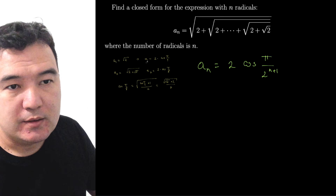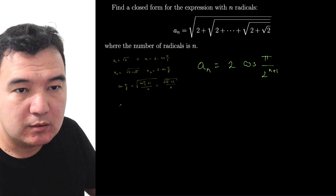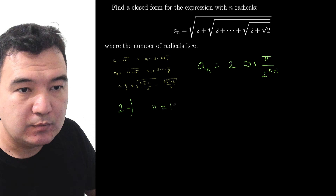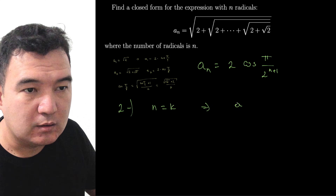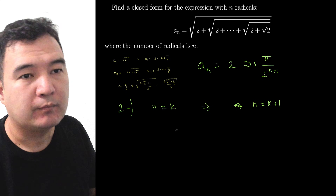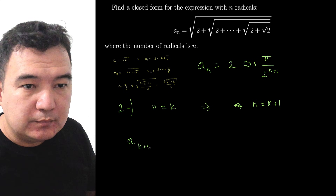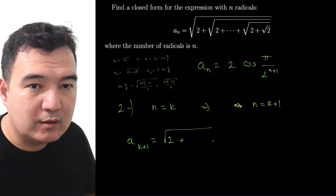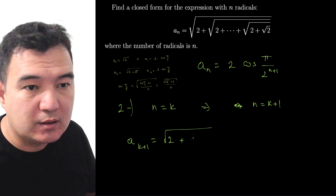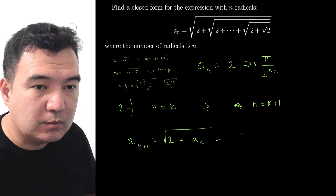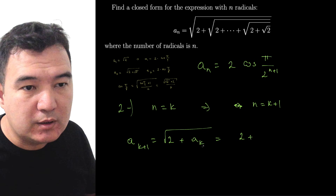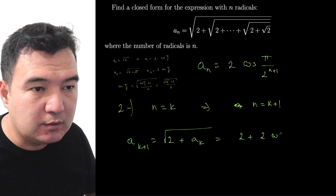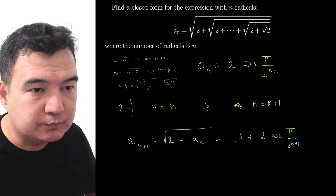The base case is already verified. Now I want to prove the induction step: if I assume the formula is true for n = k, then it should be true for n = k+1. So a_{k+1} equals the square root of 2 plus k nested radicals. Since the formula is assumed true for a_k, I can replace a_k with its closed form: 2cos(π / 2^(k+1)), giving us the square root of 2 plus 2cos(π / 2^(k+1)).